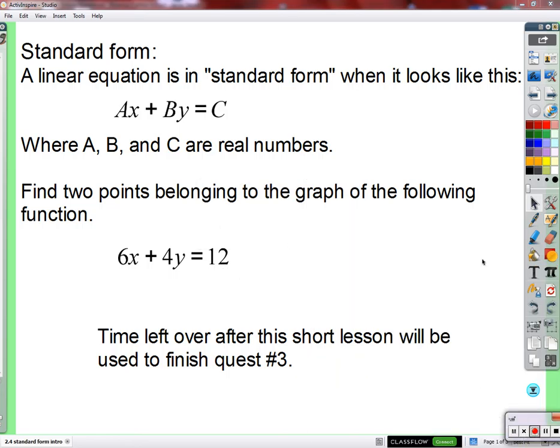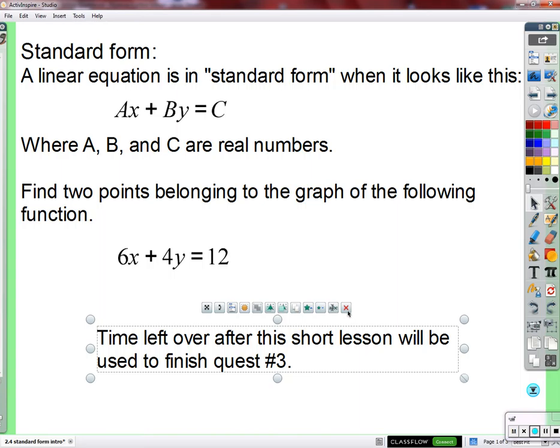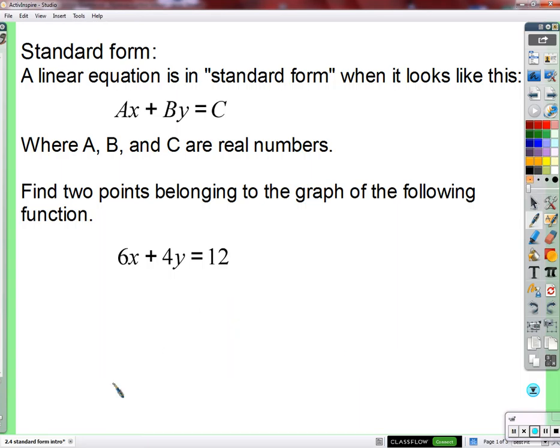Alright, does anybody have any ideas how we might find a couple of points for this guy? So we'll subtract 6x. So you're rewriting it so it looks like the old way, that works.